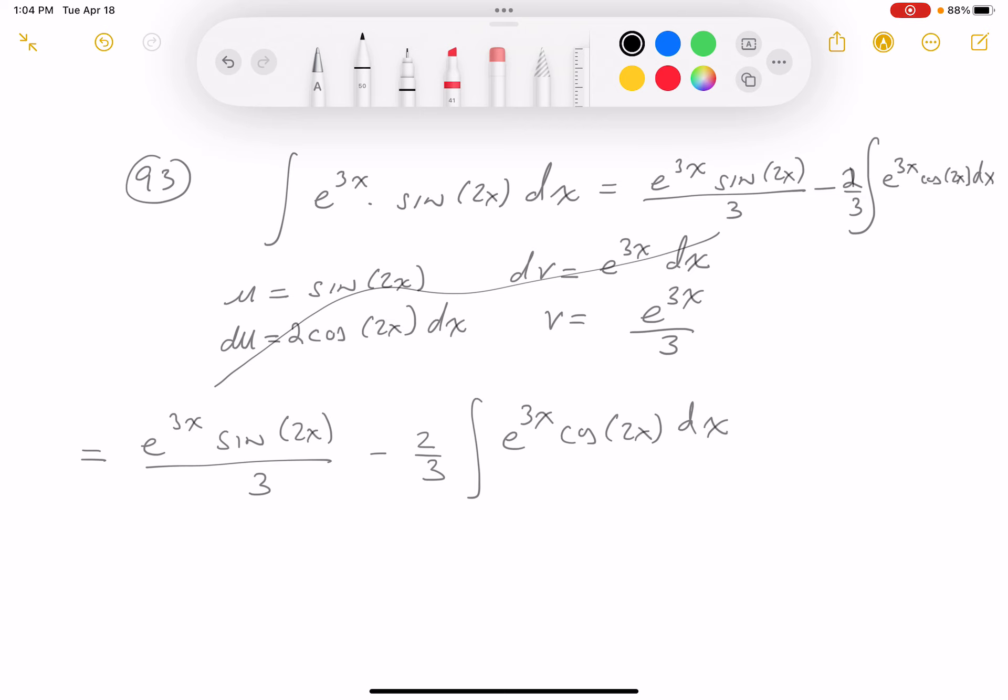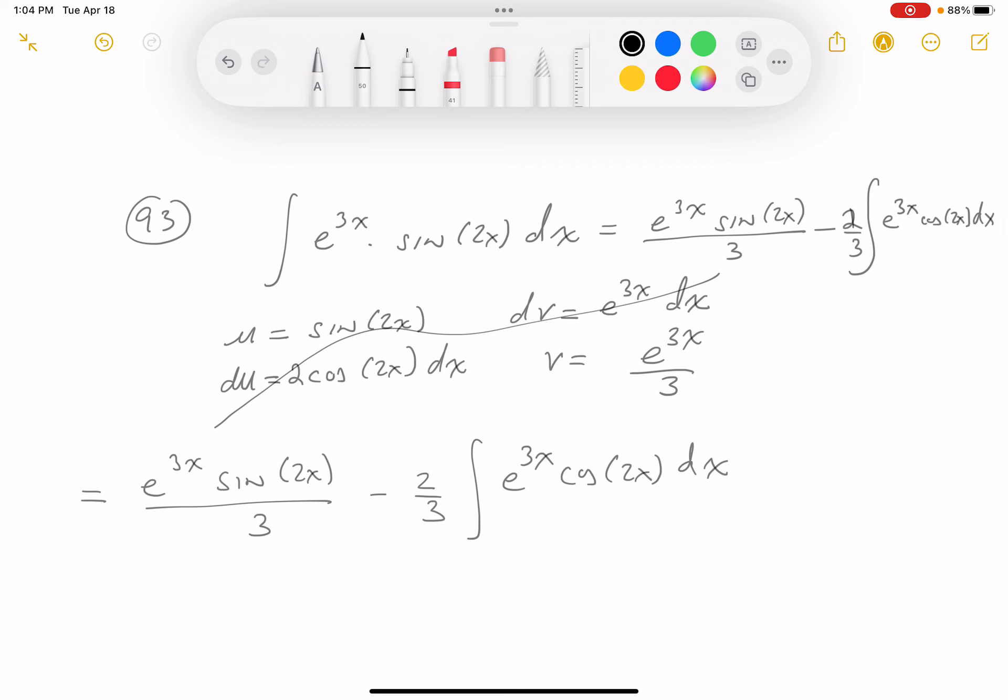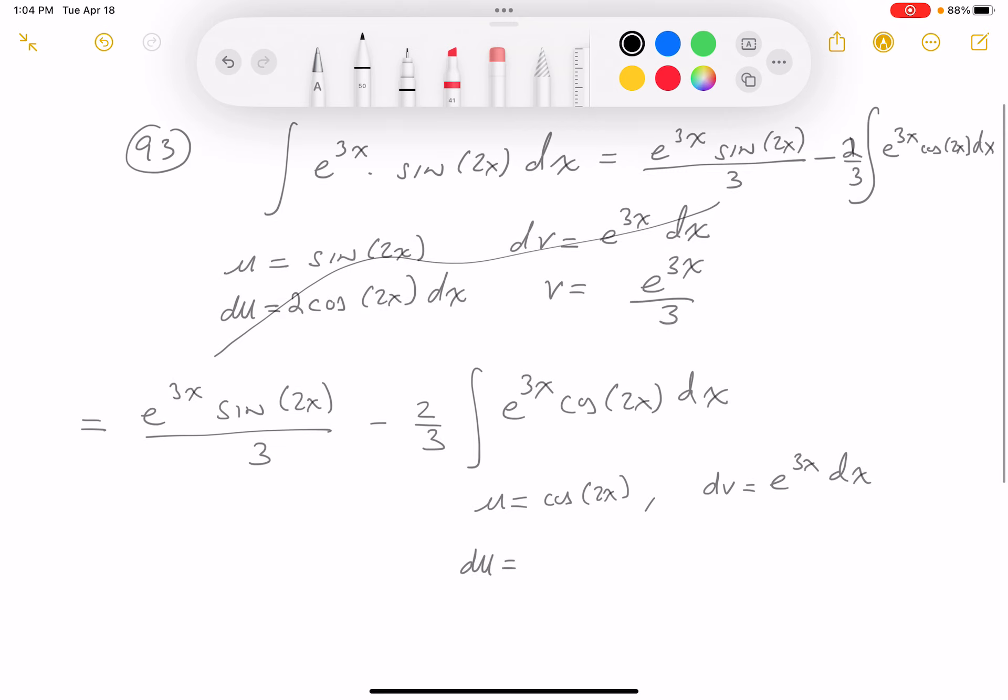And again, I want to point out that we have to do integration by parts again. Let's be consistent with what we've done in the past. So I'm going to write this down again: u equals cos(2x), and that forces me to say dv equals e^(3x) dx. du is going to be minus sin(2x) times 2 dx, and v is e^(3x) over 3. I'm not worried about the constant until all the integrations are removed.